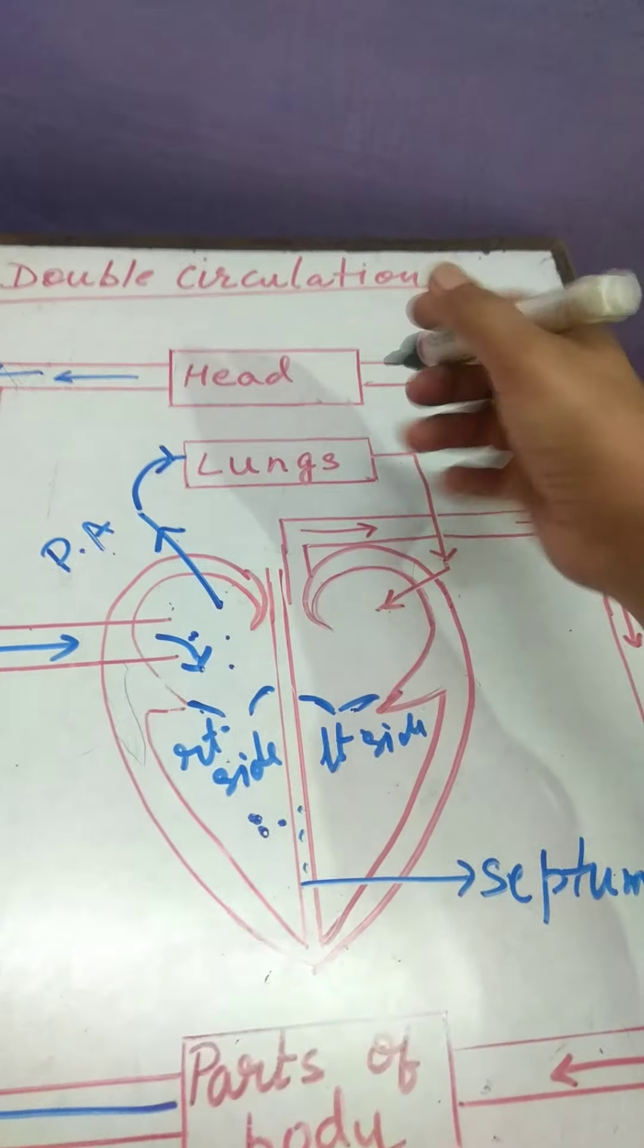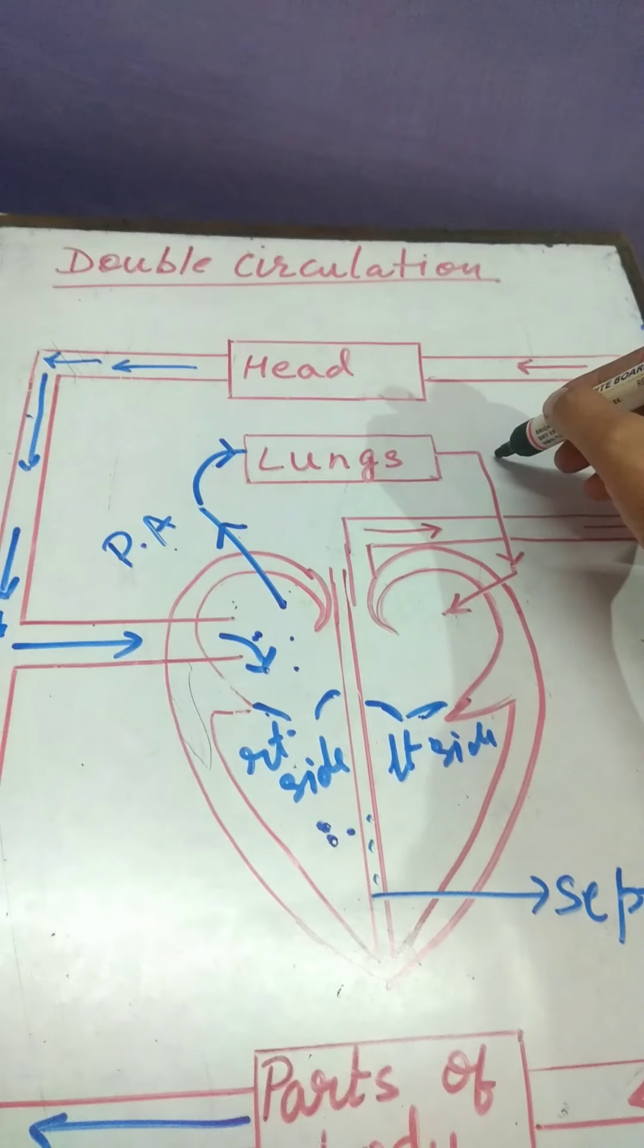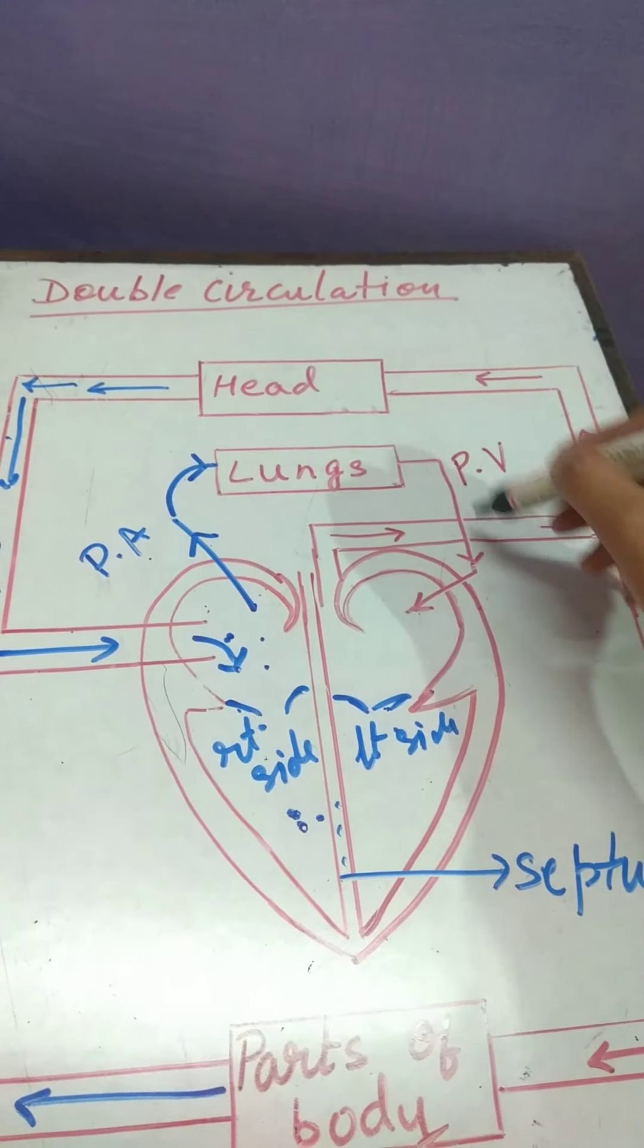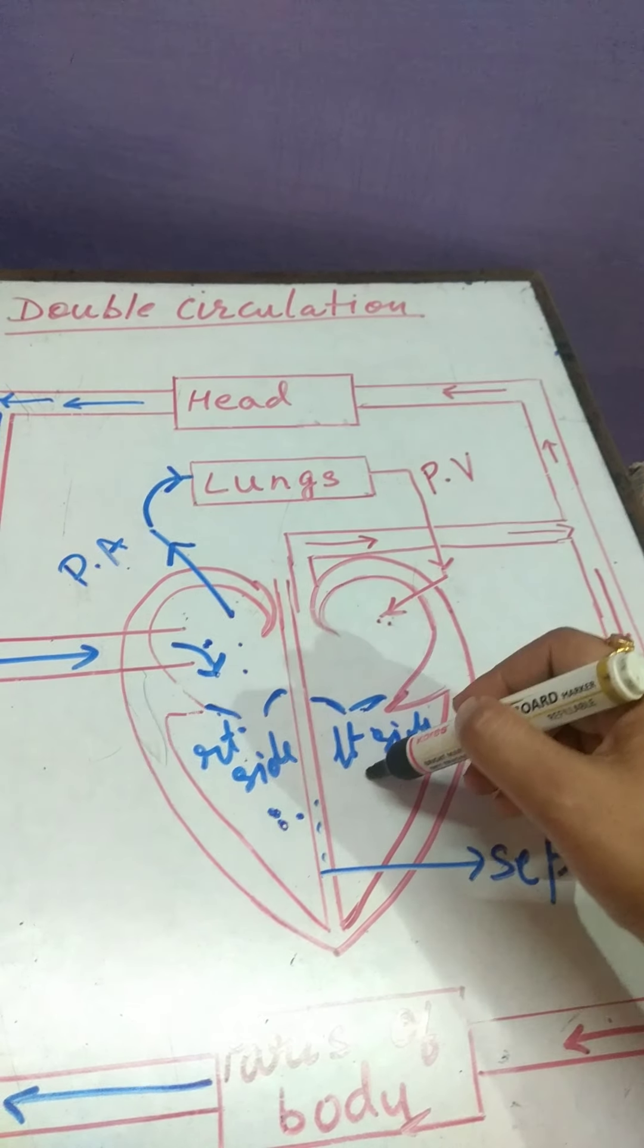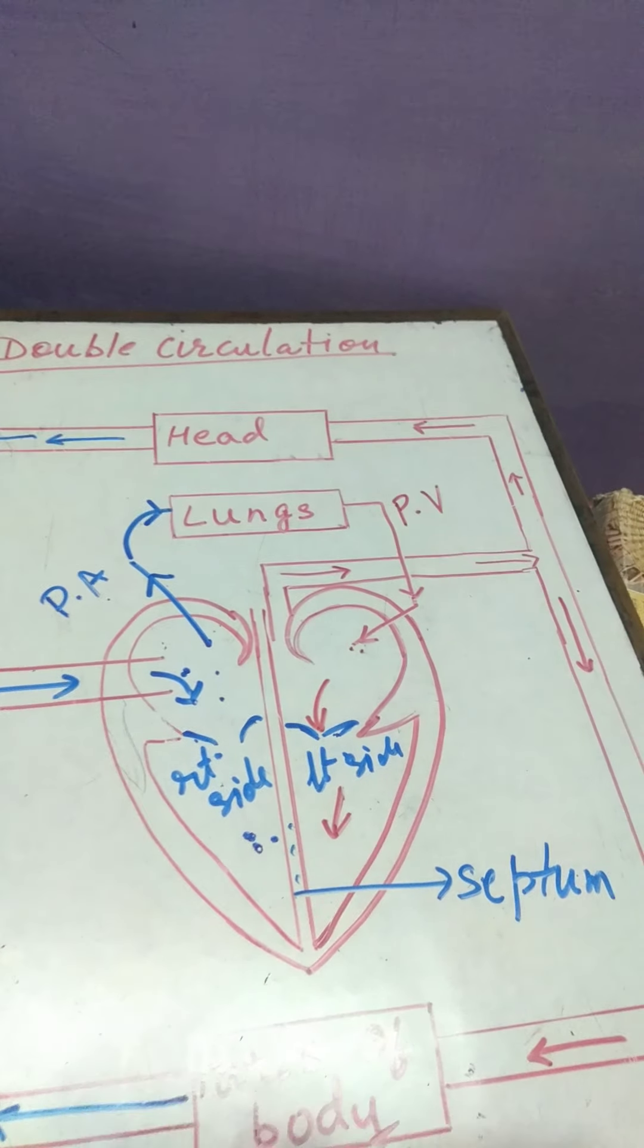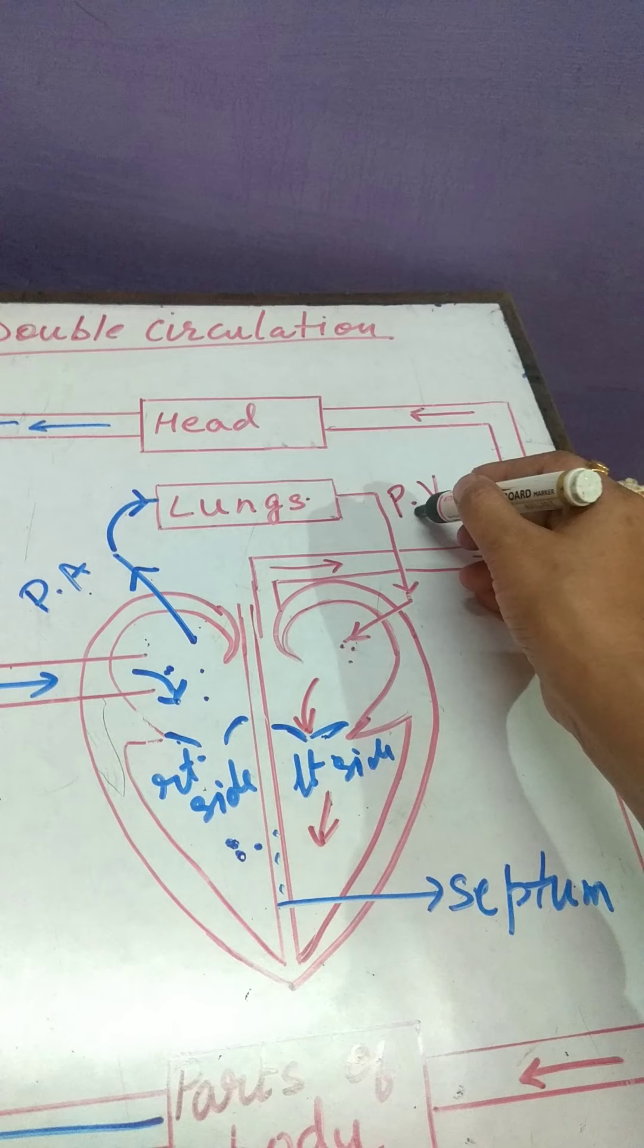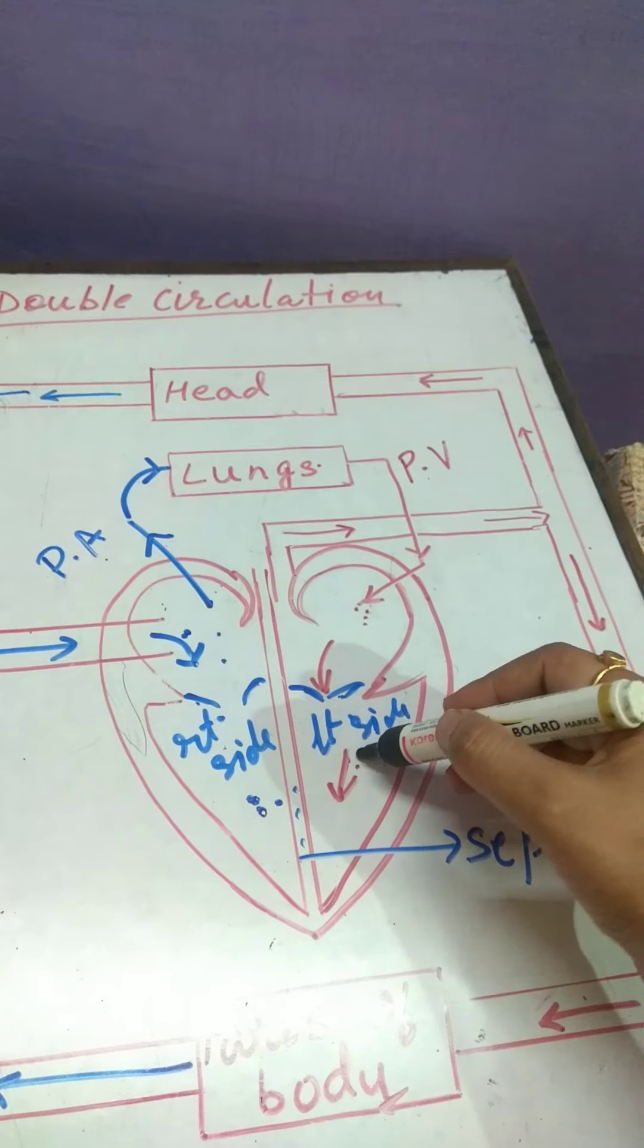After purification, pulmonary vein carries blood from lungs to the left auricle. From left auricle, it enters to the left ventricle. Now, this is pure blood. Pure blood is coming from lungs through pulmonary vein to the left auricle, then to the left ventricle.